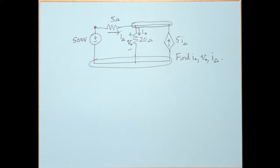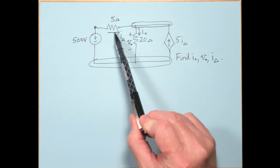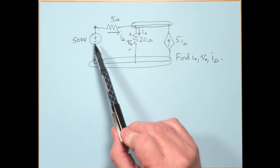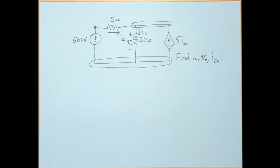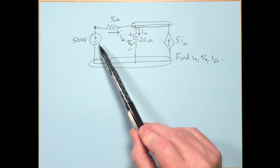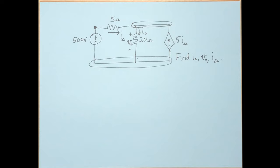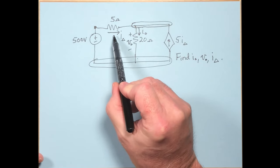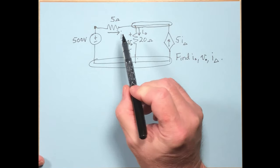With I_delta = 4 amps: I0 = 6 times 4 = 24 amps. Then V0 = 20 times I0 = 20 times 24 = 480 volts. We've found all three quantities: I_delta = 4 A, I0 = 24 A, V0 = 480 V, using KCL and KVL together.